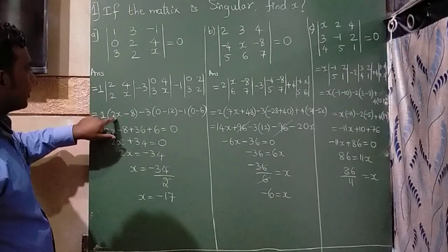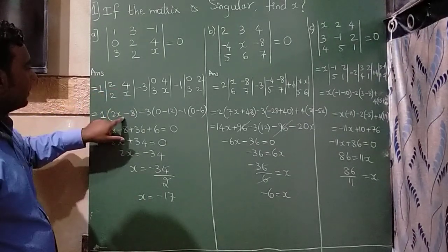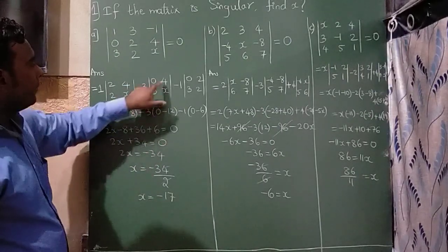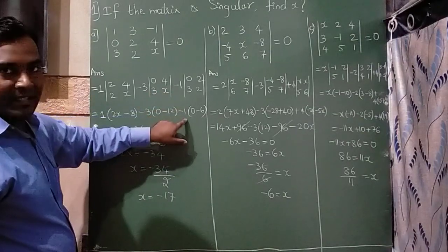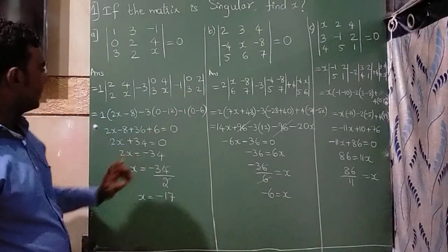Now, 2 times x is 2x. 2 times 4 times 8, so I have written minus 8. Minus 3: 0 times x is 0 minus 3 times 4 times 12. Minus 1 as it is, 0 times 2 is 0 minus 3 times 2s are 6.